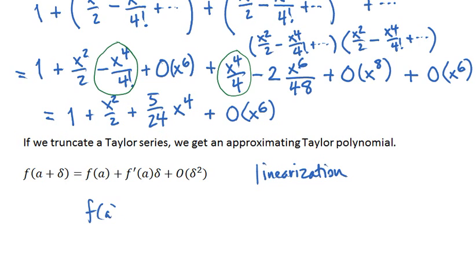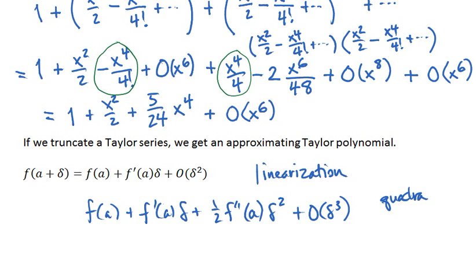If we were to go out one more term, we'd get a quadratic approximation. And for small values of delta, in other words if we stay close to the point a, for small values of delta, delta cubed should be a lot smaller than delta squared, and so we should be making less error when we get close to the point by keeping three terms instead of just two.